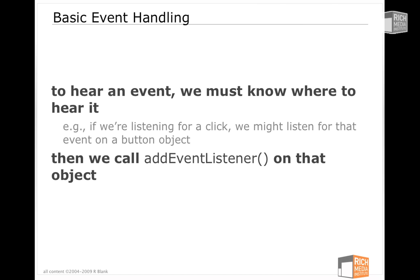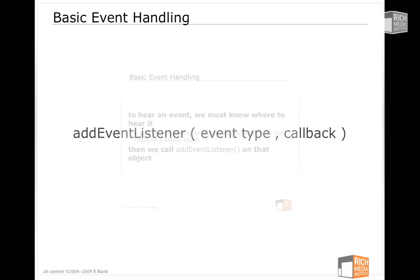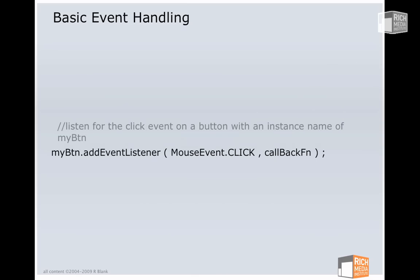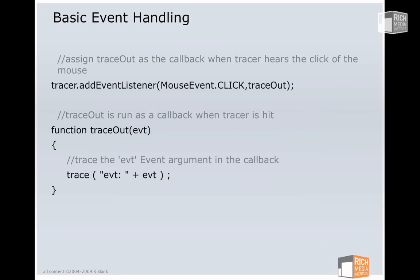To hear an event, we first need to know where we want to hear it. There's this movie clip, this button, the sound object, then we just write addEventListener on it. When we write addEventListener, we specify which event we want to hear and what function we want to run. So if we want to listen for a click, this is what it looks like. We'll listen for a click on a specific button, myBTN, tell it to add an event listener, listen for a click event, and then run a function which we call the callback function.